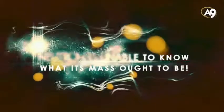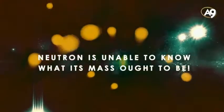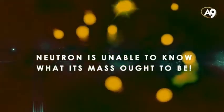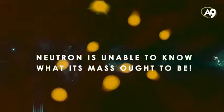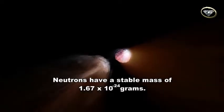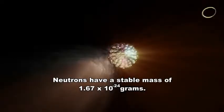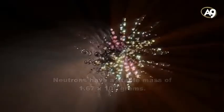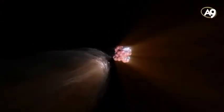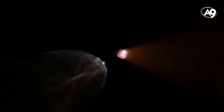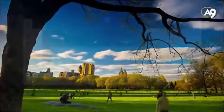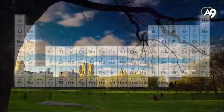The neutron does not know what mass it needs to have. Neutrons have a stable mass of 1.67 times 10 to the minus 24th grams. If the mass of the neutron were 2% greater than this, neutrons would quickly collapse and atoms would become unstable. In such a state of affairs, no element essential for life could exist, and the only element in the universe would be hydrogen.